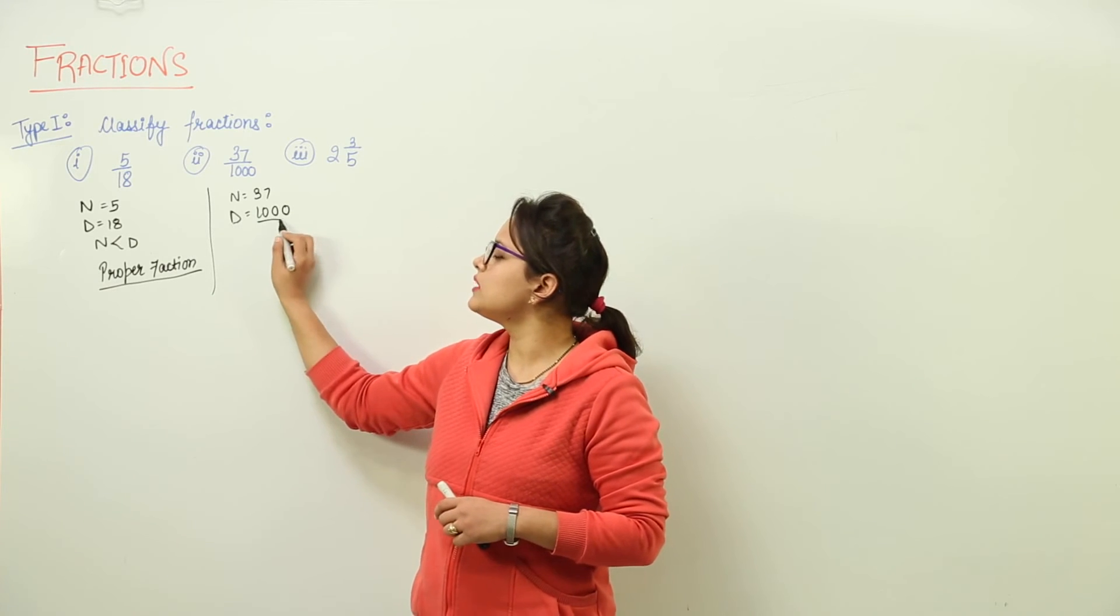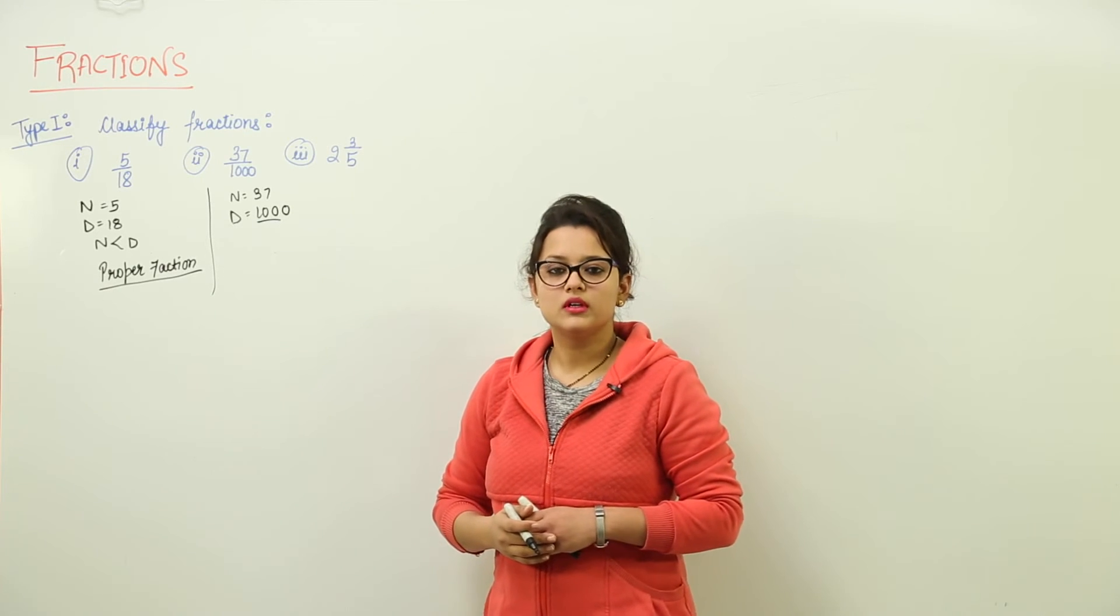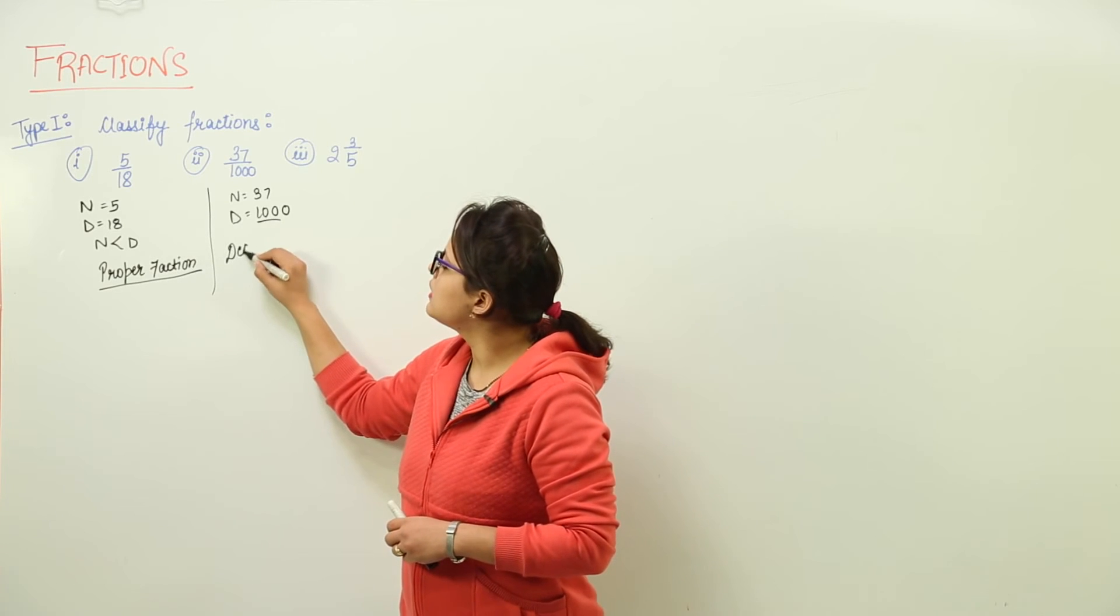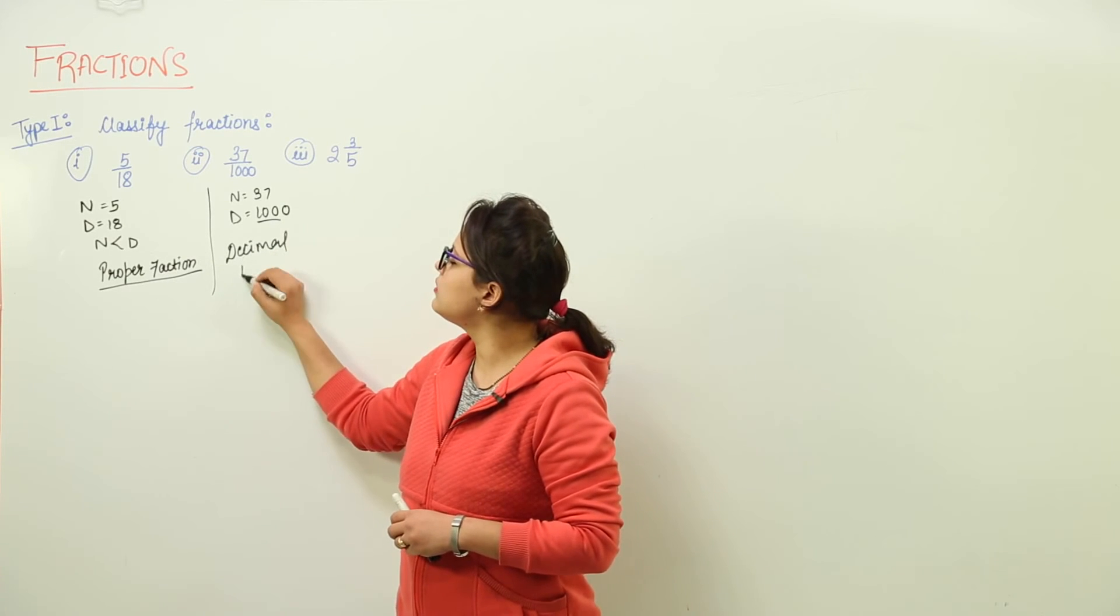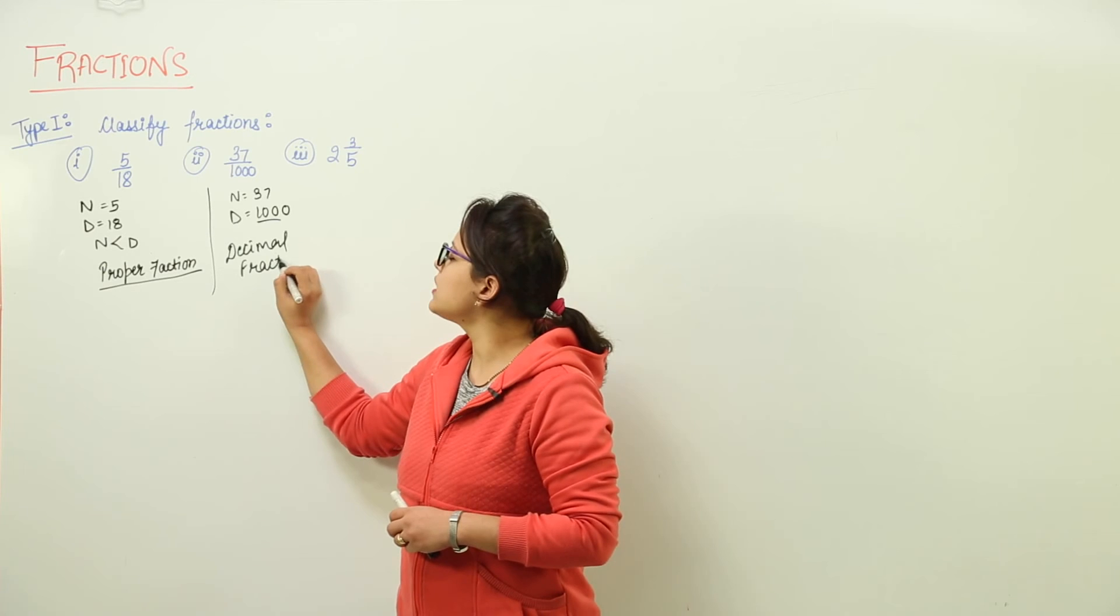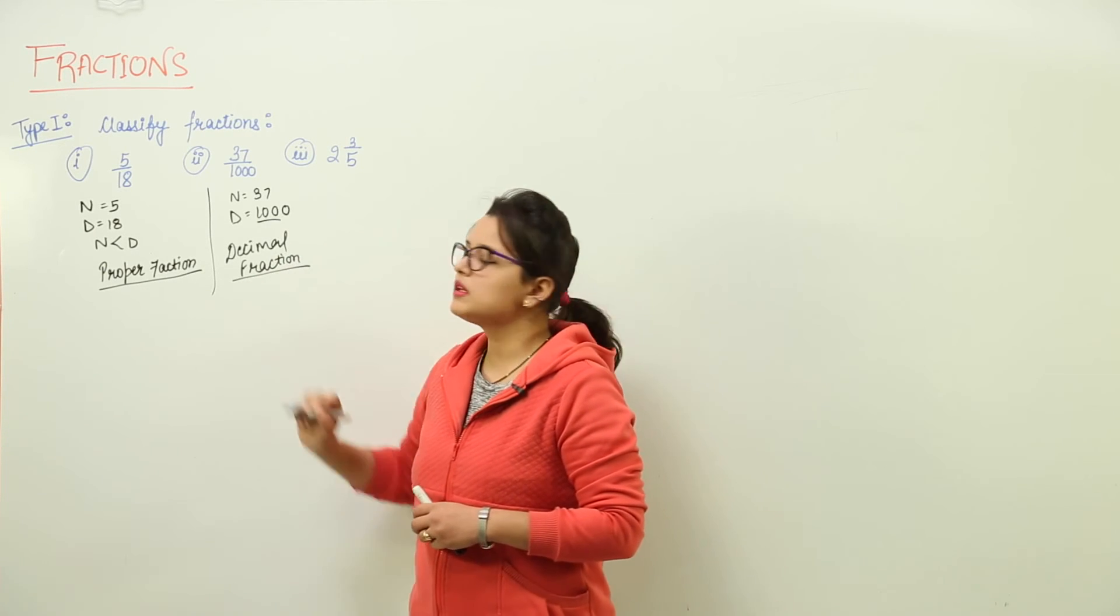Now, if you check here the denominator is in the powers of 10. That means this is representing the decimal fractions that we have learnt. The decimal fractions are those that have denominators in the powers of 10.